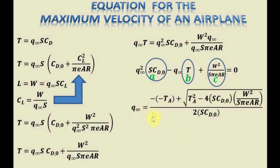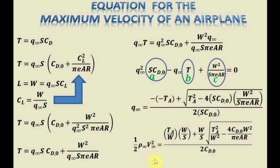We simplify this equation knowing that dynamic pressure equals one-half times the free-stream density times the free-stream velocity squared, which in this case is the maximum velocity the airplane can fly. On the right side, the surface area in the denominator is shifted to the numerator, and we multiply and divide by weight to reveal two very important airplane design parameters: thrust available divided by weight, which is the maximum thrust-to-weight ratio, and weight divided by surface area, which is the wing loading. These two parameters play a vital role in determining the maximum velocity of the airplane.